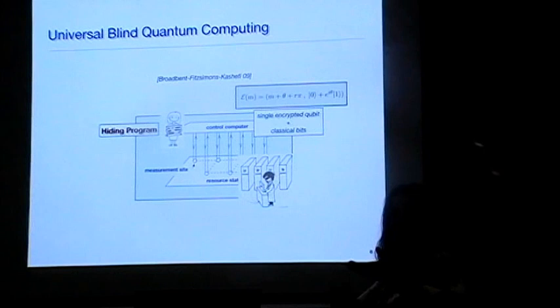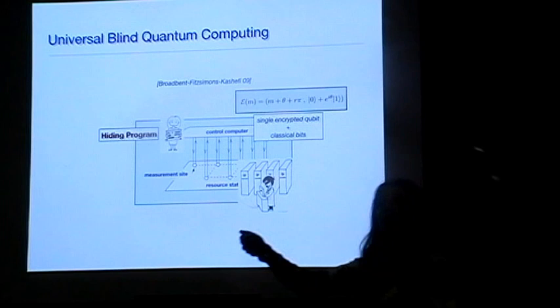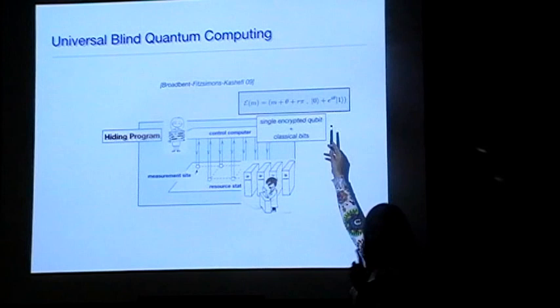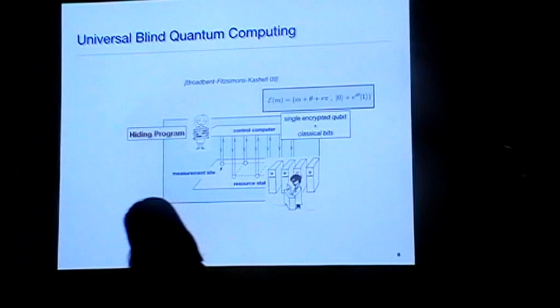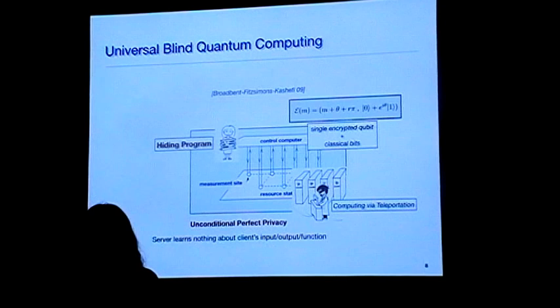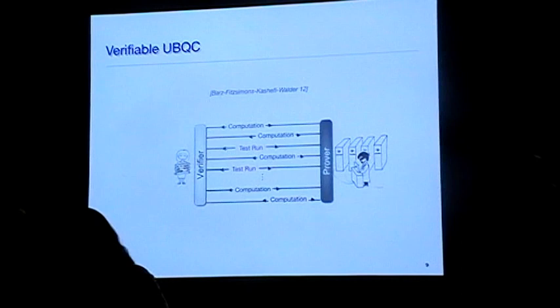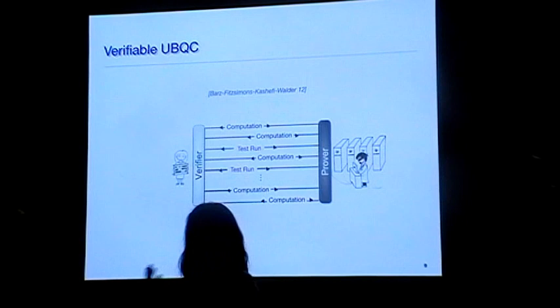In MBQC, the technique to hide computation is to apply classical one-time pad — the best way to securely hide a classical program. But in order to run computation on top of it, you don't give the classical key; you give a quantum key via teleportation. This quantum key can't be extracted beyond one bit, which you can hide again. This way you get unconditional perfect privacy — the server doesn't understand what you're doing. The structure is: one-time pad plus teleportation, repeated throughout the protocol.